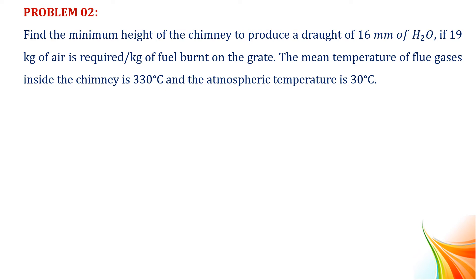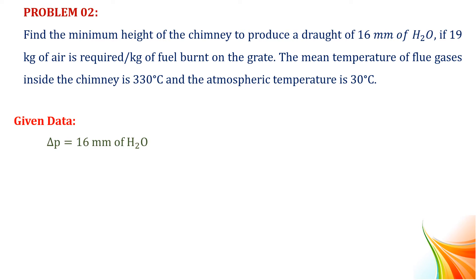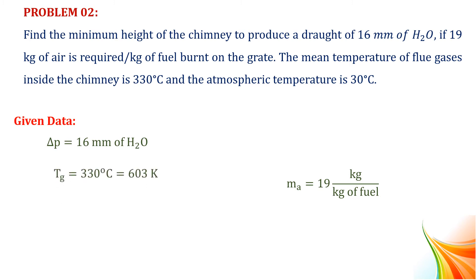Now we write the given data. We have to determine the height of the chimney to produce a draught, so ΔP = 16 mm of water. Mass of air required per kg of fuel burned on the grate, Ma = 19 kg per kg of fuel. Flue gas temperature Tg = 330°C = 603 Kelvin. Atmospheric temperature Ta = 30°C = 303 Kelvin.